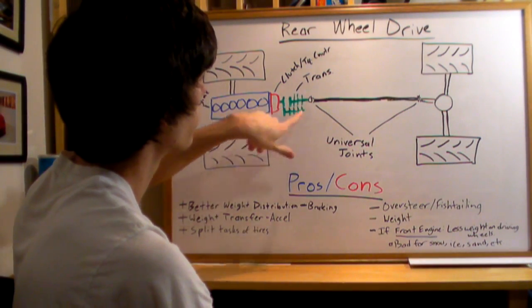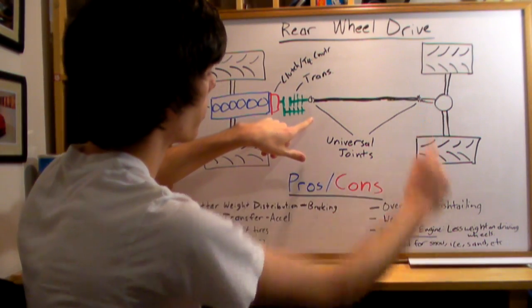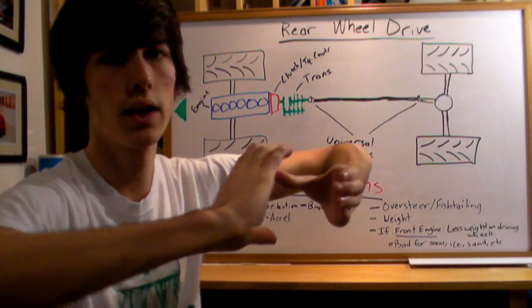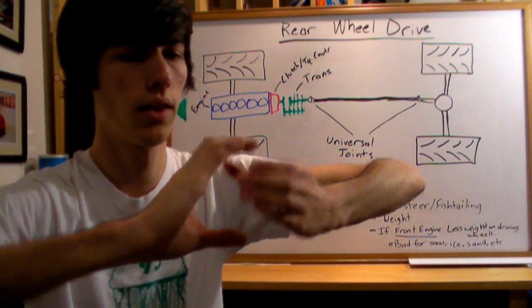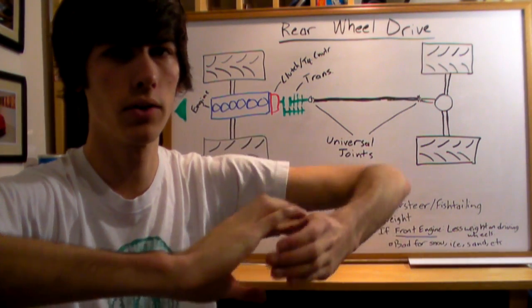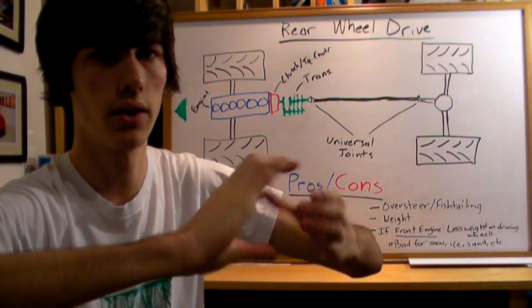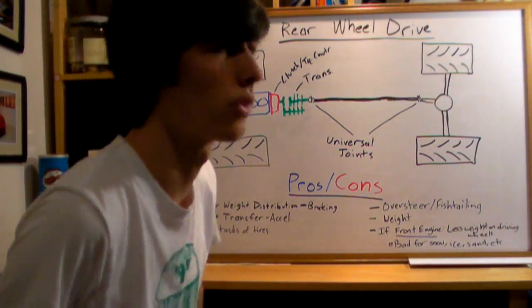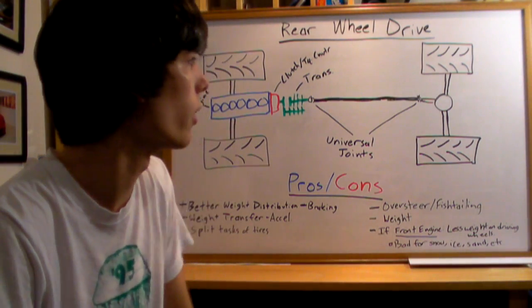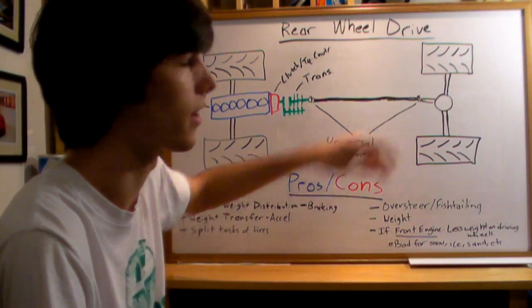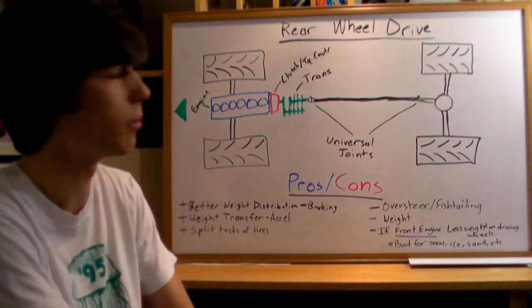This drive shaft is connected to the transmission and rear differential via universal joints. These joints can move up and down so you can have a little bit of flex and they'll still rotate together. That's important so when you're going over bumpy roads they'll stay connected, which is vital so you can keep moving.